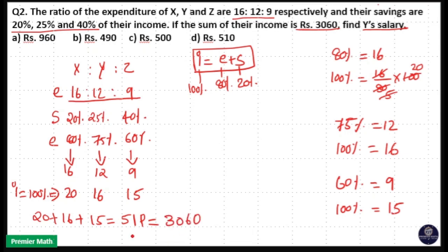That means if 51 parts is equal to 3060, then 1 part will be 3060 divided by 51. That is 51 into 6 is equal to 306. So 1 part is equal to 60.